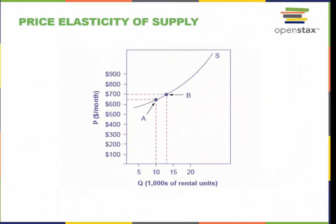The price elasticity of supply is calculated as the percentage change in quantity divided by the percentage change in price. This calculation is performed just like the one shown for price elasticity of demand. The meaning of the size of the coefficient is the same as well. If the price elasticity of supply is greater than 1, then it is considered elastic. If it is 1, it is considered unit elastic. And if it is less than 1, it is considered inelastic.